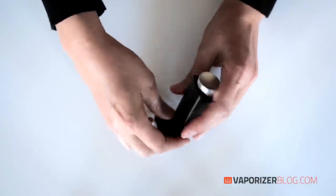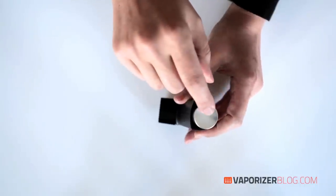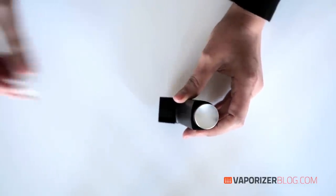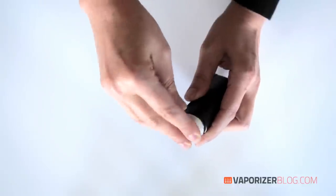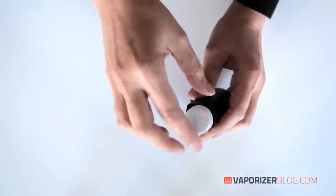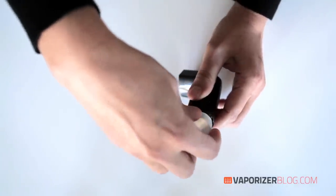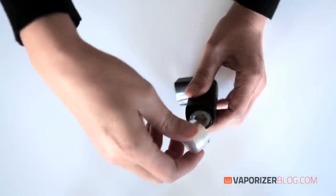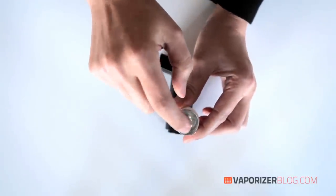Okay so let's start with the top part of this unit where you have the herb chamber underneath here. So normally you want to keep your silicone heat shield on top like this. You just slide it on so that keeps you from burning yourself when the unit is heated up.